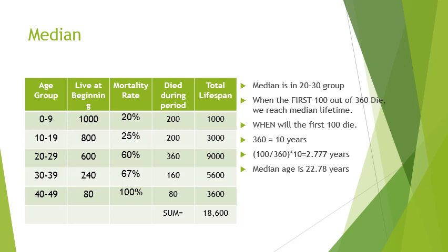We want to find when the 500th person dies — that is 100 out of the 360 deaths in the 20 to 30 age group. These 360 people will die roughly at a uniform rate over 10 years. The first 100 will occur in the proportion 100 divided by 360, which is about one-third, so we multiply by 10 to get 2.77 years. Adding the 20 years already elapsed, the median age is 22.78 years — substantially higher than the mean life expectancy of 18.6 years.